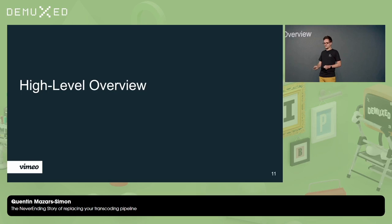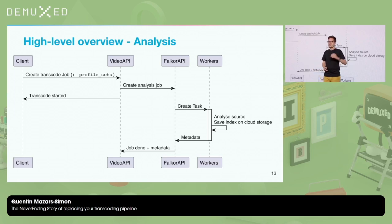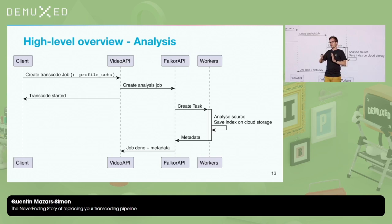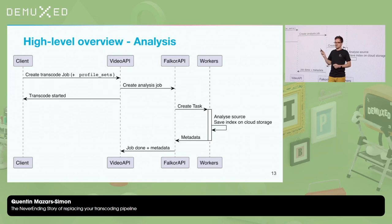At a high level, there are two steps for transcoding. First, you analyze the video. The client talks to the video API and says, 'I've got this video with these profile sets, please transcode it.' The video API asks the Filecore API to create an analysis job, an analyze worker picks it up and analyzes the source file. It saves an index to cloud storage — useful later for knowing where we can chunk the video — and returns metadata like height, width, frame rate, and whether it's HDR. That metadata bubbles back to the video API, which makes some decisions.